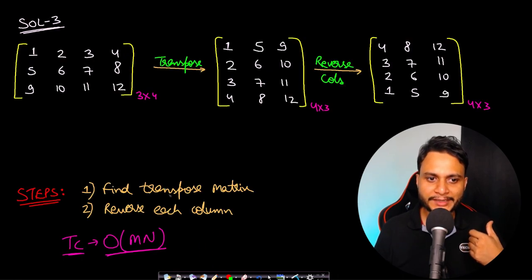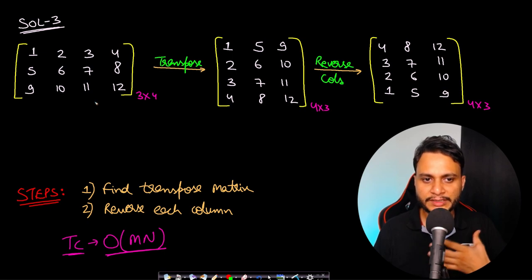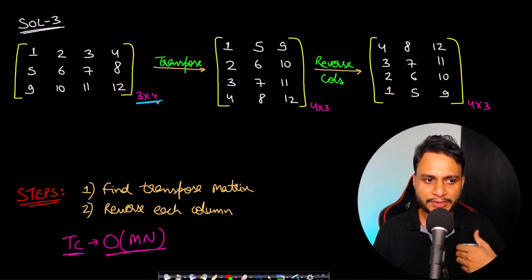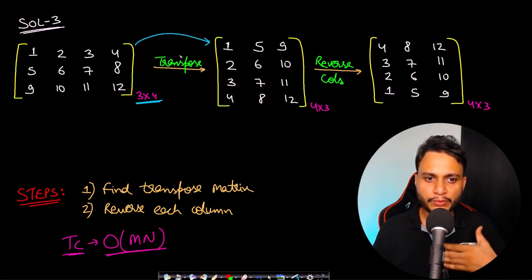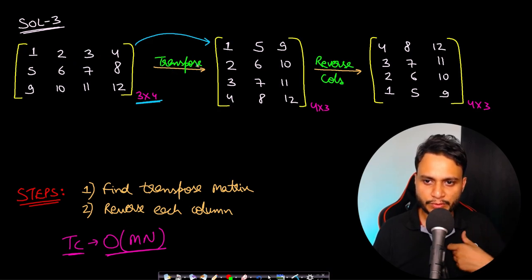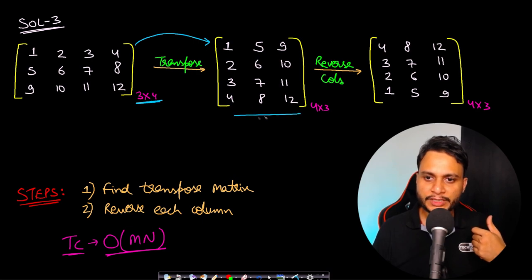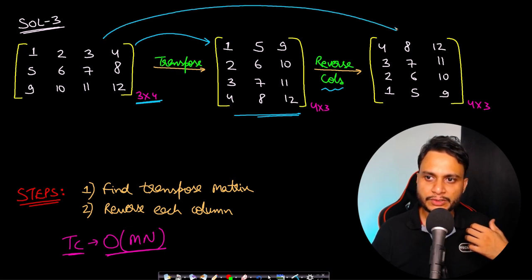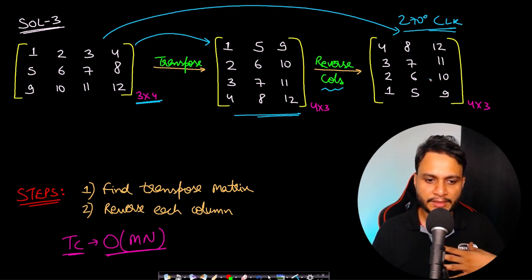We want to get this done in a single step in the most efficient way possible. One such solution: given the M by N matrix — rectangular or square — you first find the transpose of the matrix. A transpose is nothing but converting rows to columns and columns to rows. Once you have the transpose, you just reverse the columns, and that converts your given matrix into the 270 degrees clockwise rotated result.